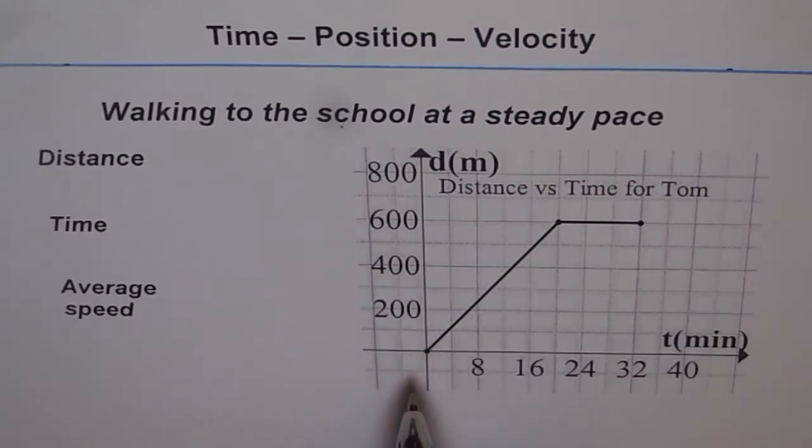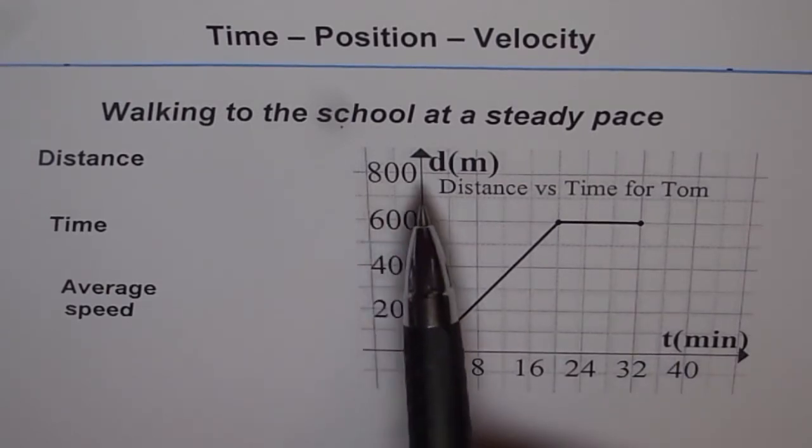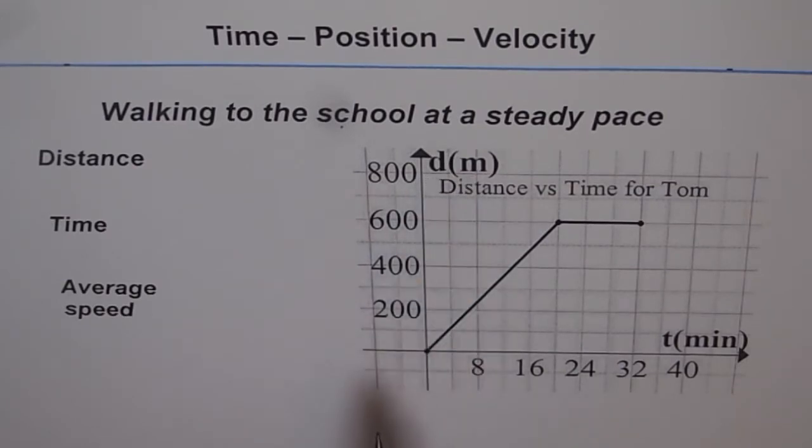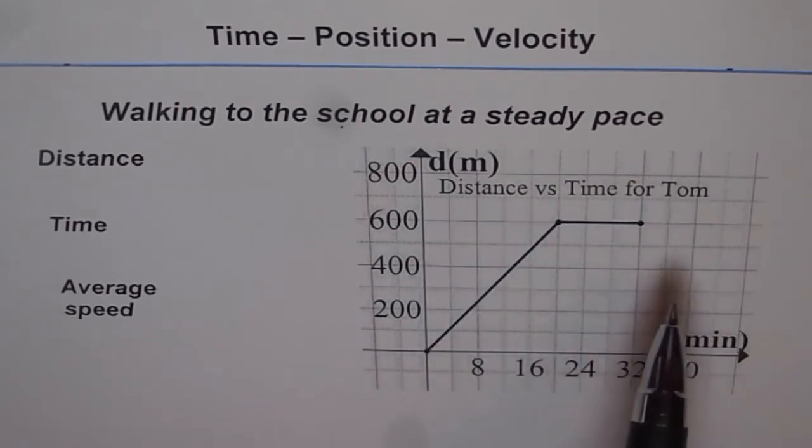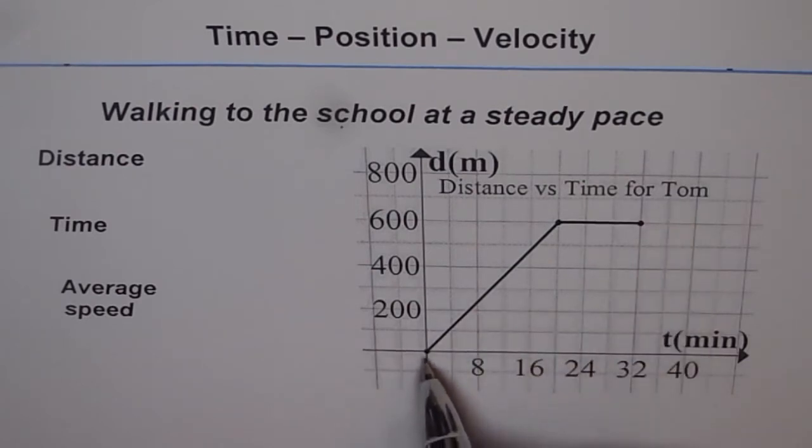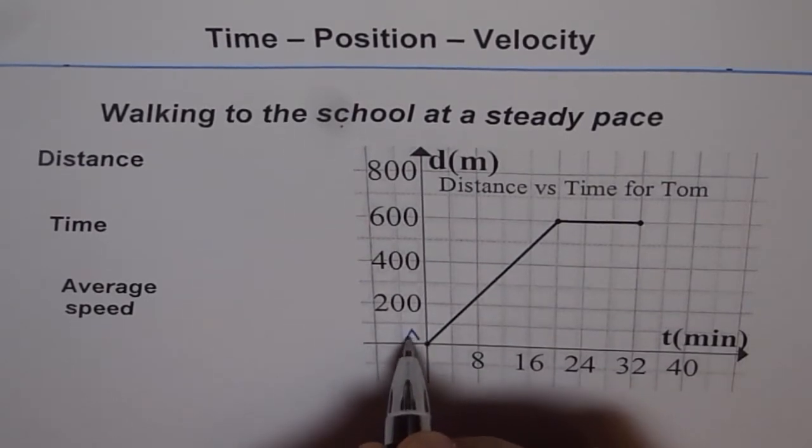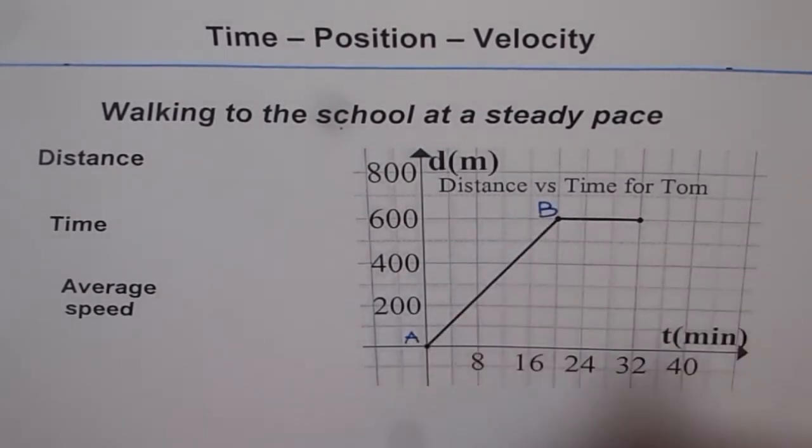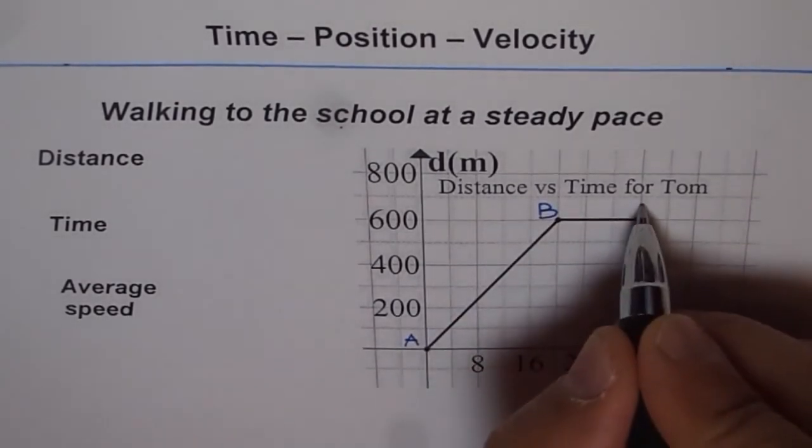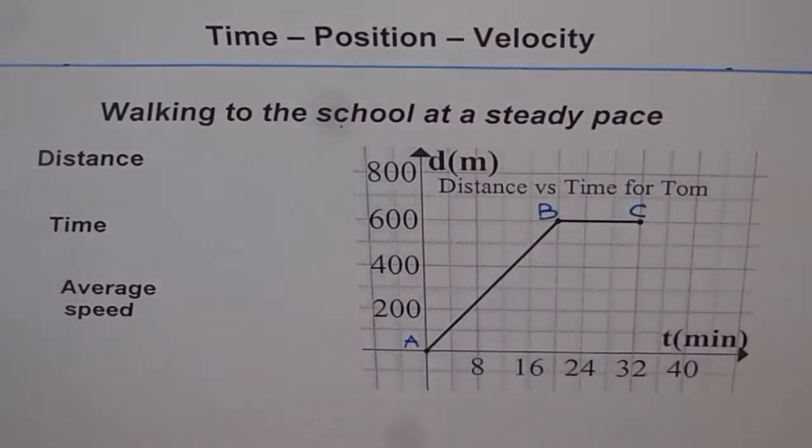Now in this graph we have x-axis where we have written t for time in minutes. And on the y-axis we have written d for distance in meters. And I am trying to give you a story which says distance versus time for Tom. And I am assuming that Tom is starting from his home and going straight to the school. So let a be the starting point home for Tom and let b be the point at school. And then we will also consider what this c is. We will figure out what this c is later.